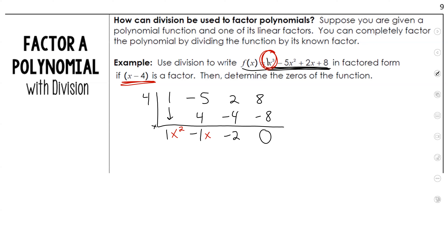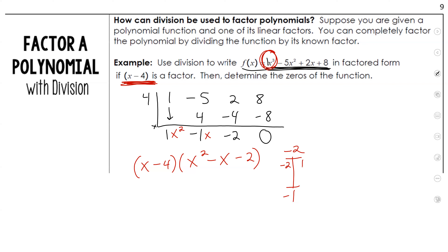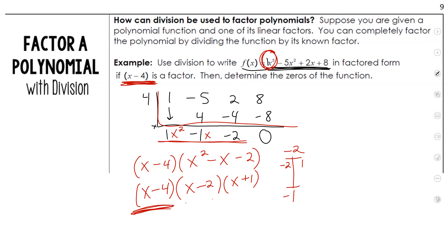What we have is our original factor that they told us was a factor: x minus 4. That's your linear factor. And we also have x squared minus x minus 2. From here, we can find the other linear factors. I need two numbers that multiply to negative 2 but add to negative 1 — that's negative 2 and 1. So my factors are x minus 2 and x plus 1.